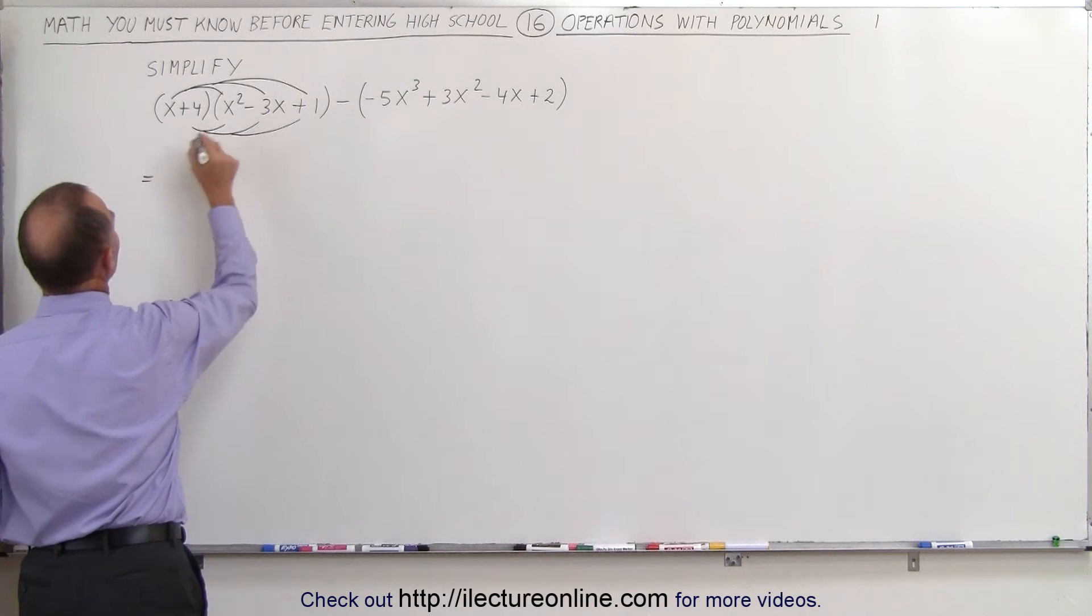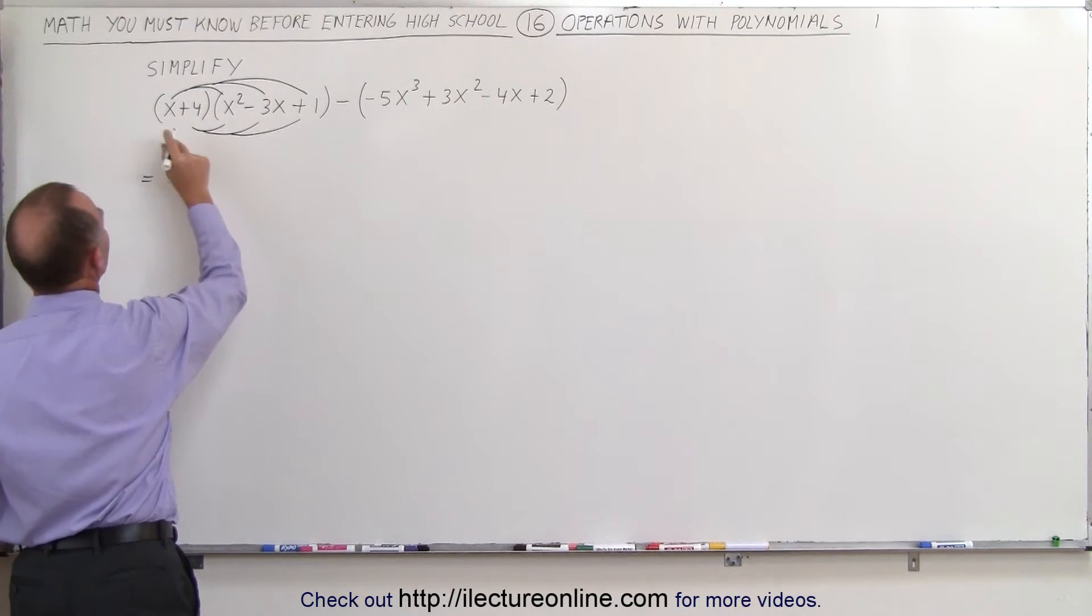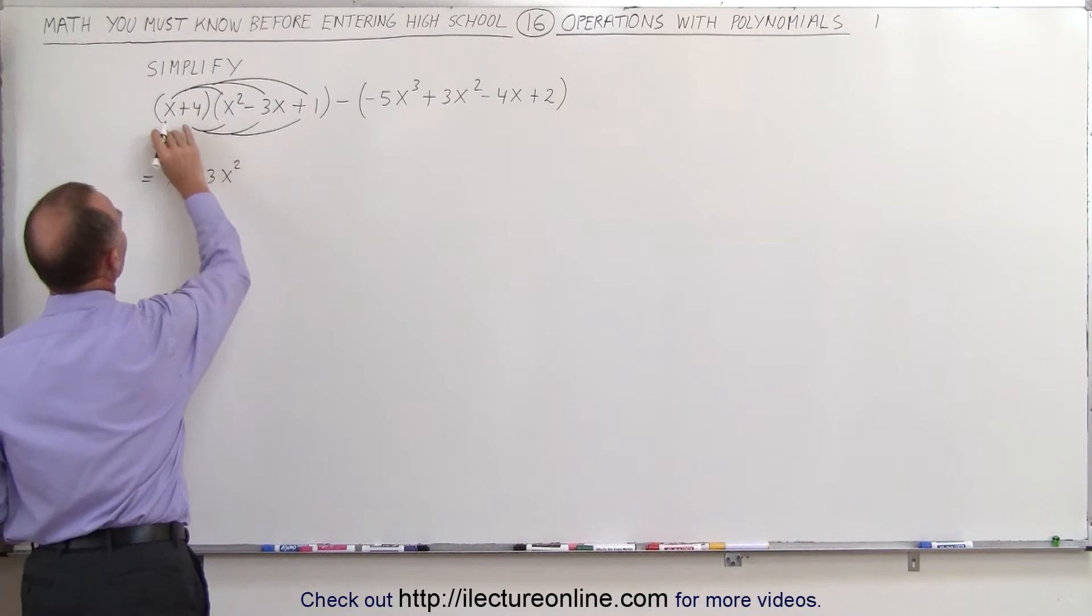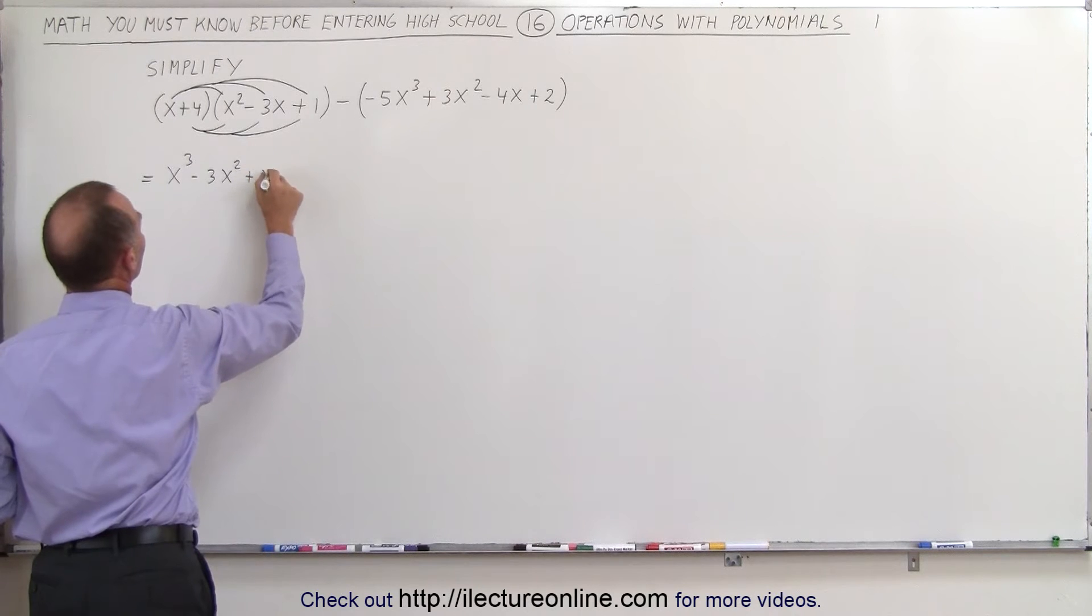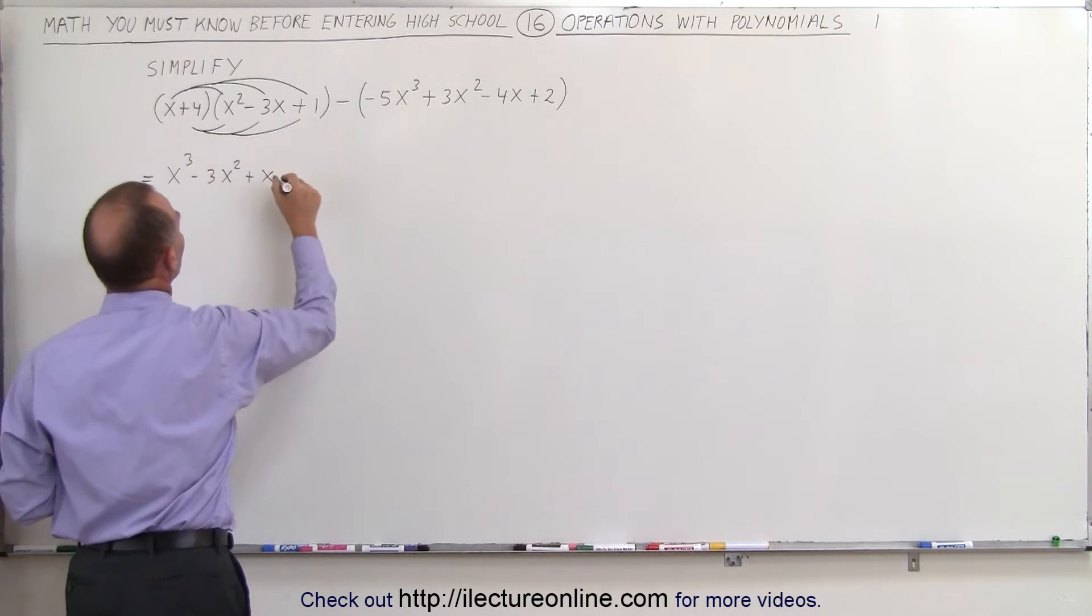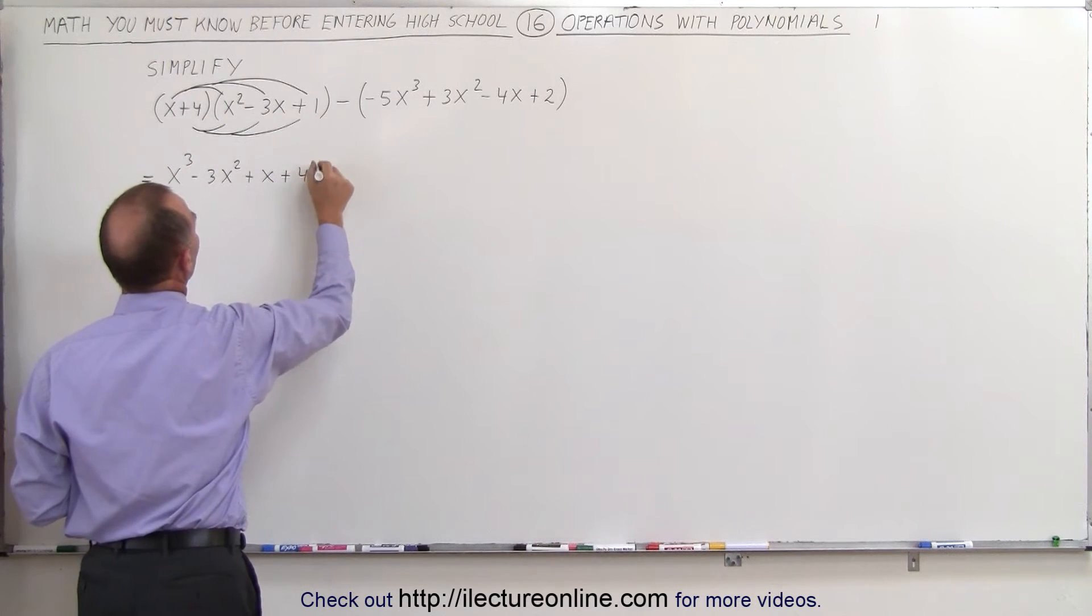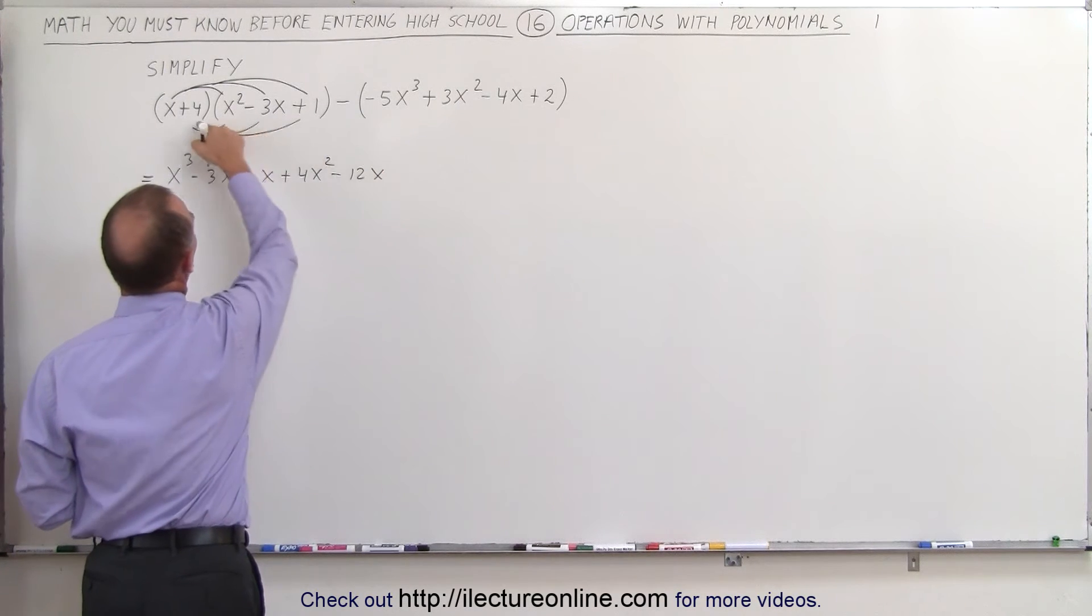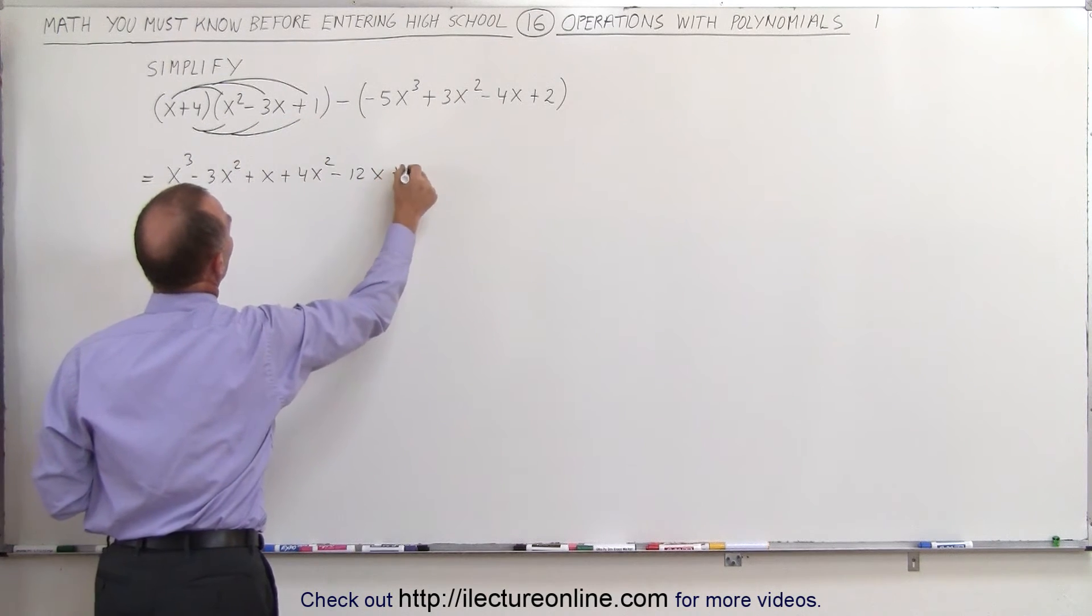So this is equal to x times x squared, which is x cubed, x times minus 3x, which is minus 3x squared, and x times 1 is plus x. 4 times this gives us plus 4x squared. 4 times this is minus 12x, and 4 times 1 is plus 4.